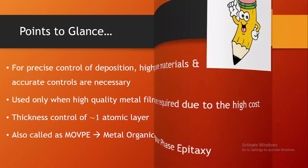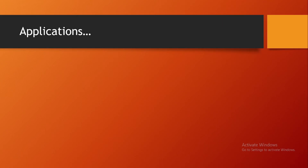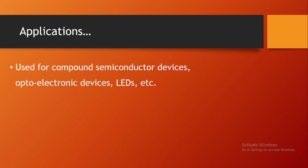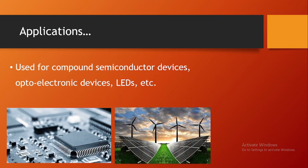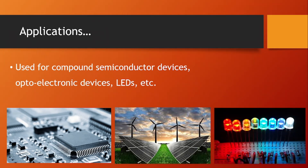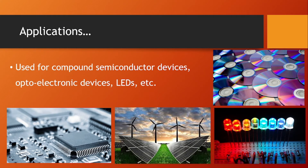Coming to the applications: the thin films obtained using MOCVD are mainly metallic and of very high quality. They are used for compound semiconductor devices, optoelectronic devices where light is converted to electrical energy — such as solar cells, cell phones, optical communication systems, optical storage systems like CDs and DVDs, as well as LEDs. For higher-end applications, MOCVD gives very good results with excellent precision compared to other thin film deposition techniques.